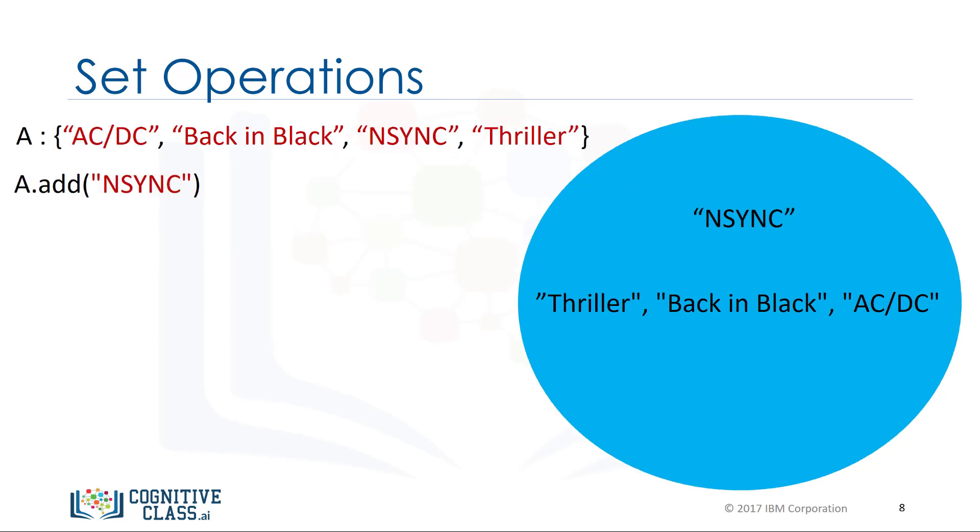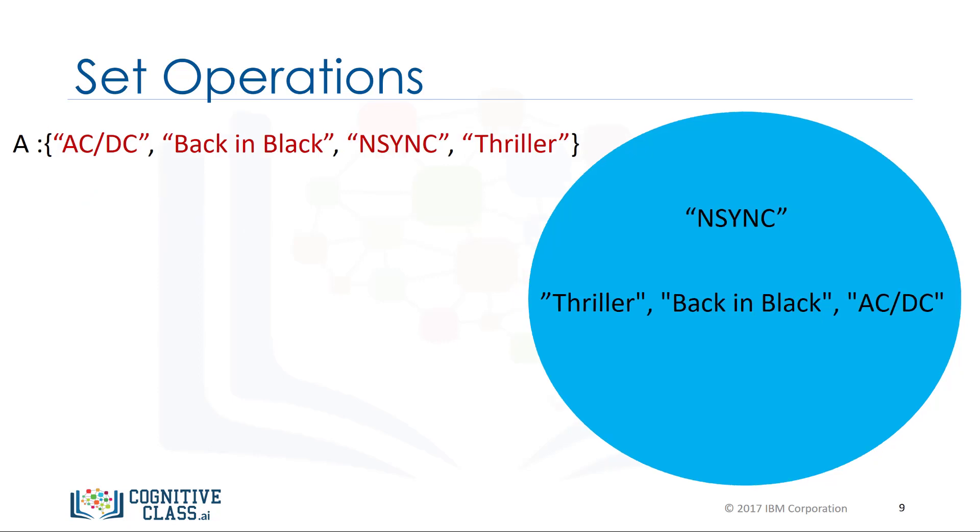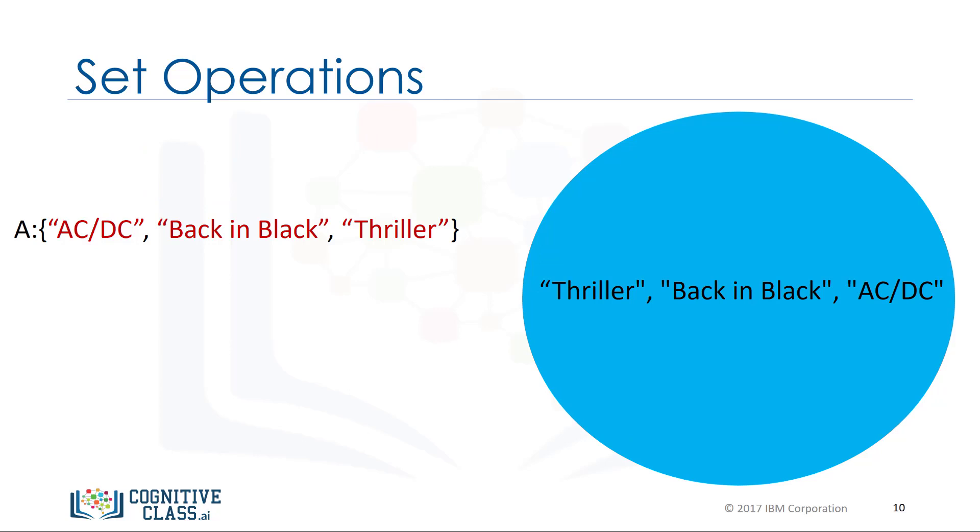If we add the same item twice, nothing will happen as there can be no duplicates in a set. Let's say we would like to remove NSYNC from set A. We can also remove an item from a set using the remove method. We just put the set name followed by a dot, then the remove method. The argument is the element of the set we would like to remove, in this case, NSYNC. After the remove method is applied to the set, set A does not contain the item NSYNC. You can use this method for any item in the set.